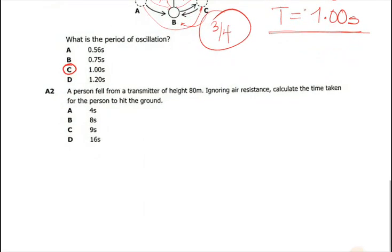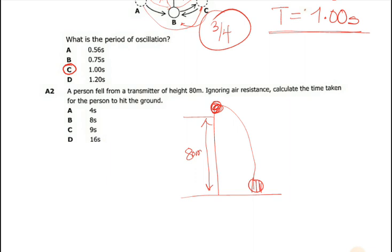For two, it says a person fell from a transmitter of height 80. So let's say this is a height and this is a ground. So the height is 80 meters. So this is like a person here. That's like a person who falls all the way to the ground here. Calculate the time taken for the person to hit the ground.